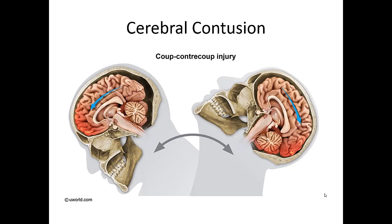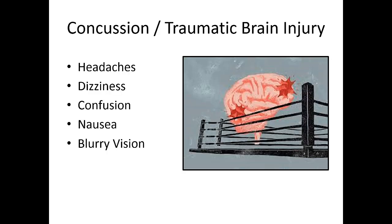Cerebral contusion — coup-contrecoup injury — is based on the fact that the skull is an enclosed environment and the brain has some wiggle room. When the head sustains an injury, the brain slides forward, hits the front of the skull, then slides back, injuring the back of the brain as well. If there is no associated vascular damage, this is essentially what we call a concussion or traumatic brain injury. Patients may complain of headaches, dizziness, confusion, nausea, vomiting, vision changes, or trouble concentrating. Concussion symptoms can last up to a month after a head injury.